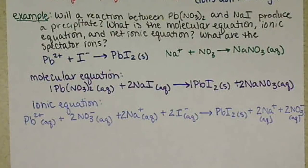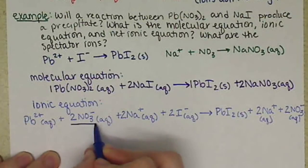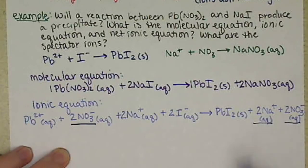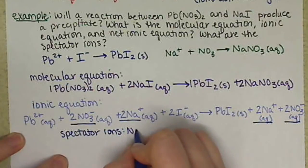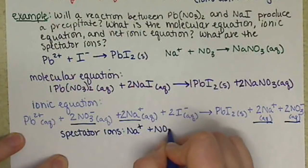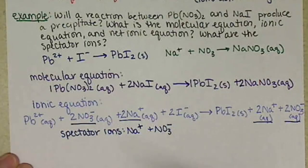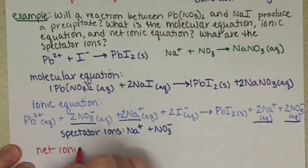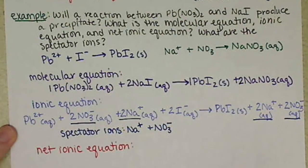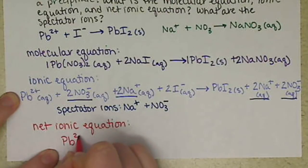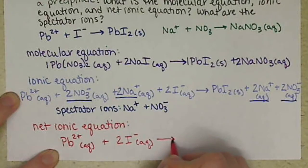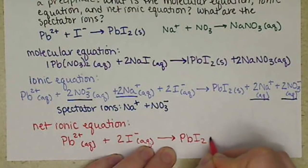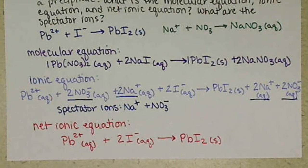To write the net ionic equation, I eliminate the spectator ions. I have 2 nitrate ions on both sides and 2 sodium ions on both sides, so the spectator ions are Na⁺ and NO₃⁻. The net ionic equation is: Pb²⁺ aqueous plus 2 I⁻ aqueous forms PbI₂ solid. I definitely recommend looking at the Chapter 8 Activity for more practice.